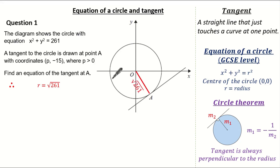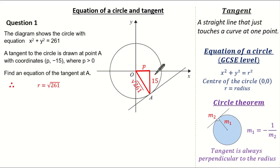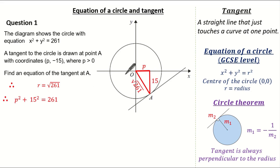The radius is root 261, and the horizontal distance is p given by the coordinate. I'm going to label the vertical distance as 15 — not minus 15 because it's a length. We have a right-angled triangle with known lengths, so we're using Pythagoras. Substituting in, we know p squared plus 15 squared equals root 261 squared, which is 261.